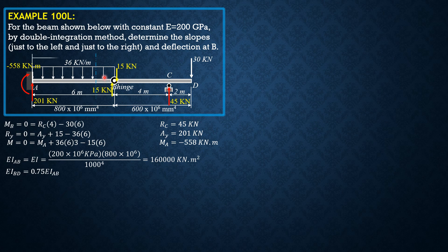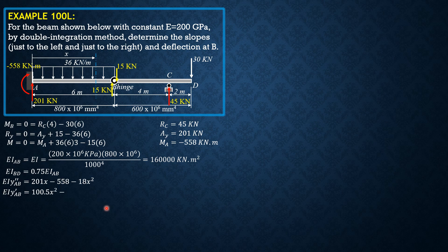The differential equation for portion AB: EI y'' AB equals 201x minus 558 minus 18x squared. Integrating once: EI y' AB equals 100.5x squared minus 558x minus 6x cubed plus C1. There is no C1 because the slope and deflection at A for a fixed support are both zero, so C1 equals 0.